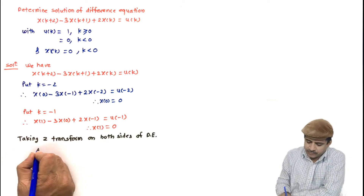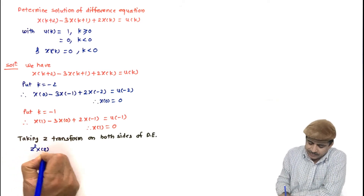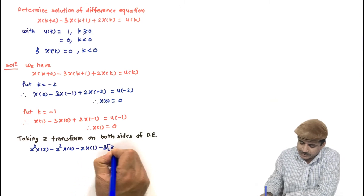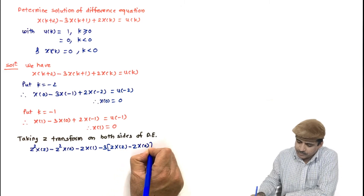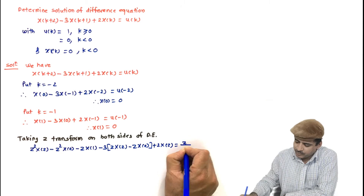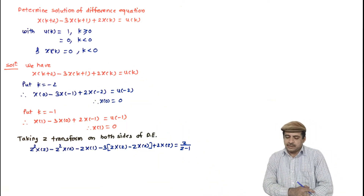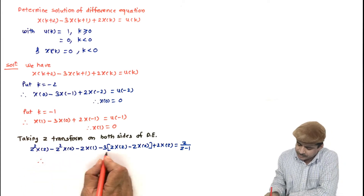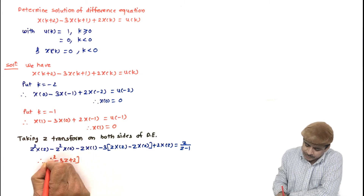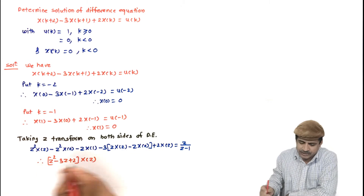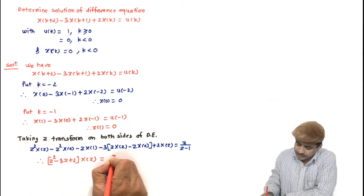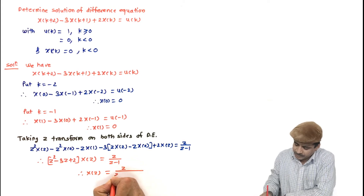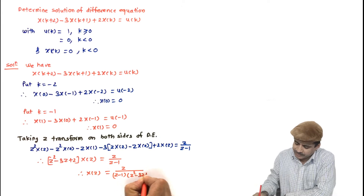Taking Z transform on both sides of the difference equation, we get z²·X(z) − z²·x(0) − z·x(1) − 3[z·X(z) − z·x(0)] + 2·X(z) = z/(z−1). Collecting terms — since all initial conditions are zero — we get (z² − 3z + 2)·X(z) = z/(z−1), and hence X(z) = z / [(z−1)(z² − 3z + 2)].